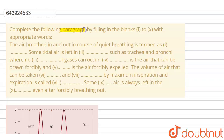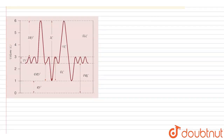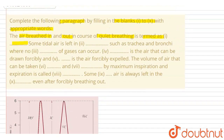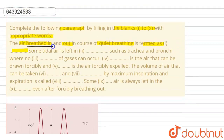Hello everyone. The question is: complete the following paragraph by filling in the blanks 1 to 10 with appropriate words. The first sentence is: the air breathed in and out in the course of quiet breathing is termed as what. This is known as tidal volume, so number one will be tidal volume.